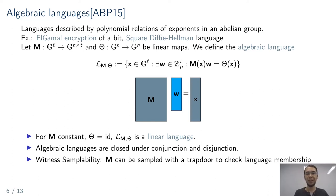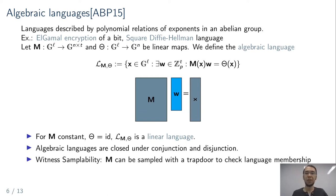For algebraic languages, the trapdoor won't be as straightforward because a vector in the kernel of the language matrix for every x generally won't exist or won't be computable. So we can't define it exactly as for linear languages, but the spirit is the same. An example of a witness-sampleable algebraic language is ElGamal encryption of a bit, where the secret key is the trapdoor. For the squared Diffie-Hellman language it isn't clear what this trapdoor would be, so not all algebraic languages are witness-sampleable, but many interesting ones are.